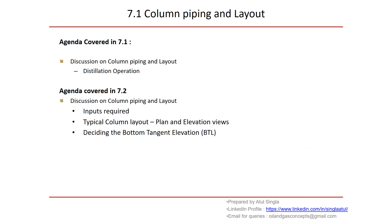We have just completed our discussion on distillation operation — how the column works, how it is divided into different sections, and how those components are extracted. In the next part we'll discuss the inputs required to start our column layout, then a typical layout description with plan view and elevation views, and how the bottom tangent elevation is decided for a column. I hope you are enjoying the video — see you in the next part.